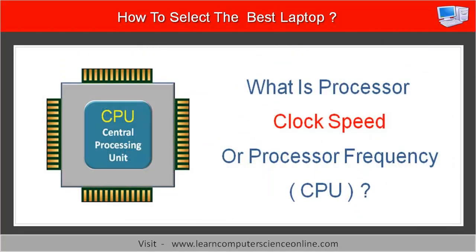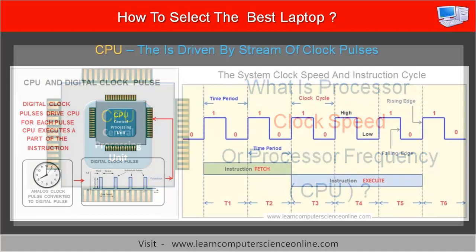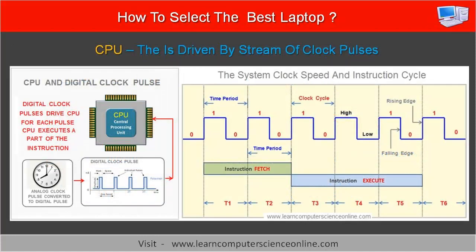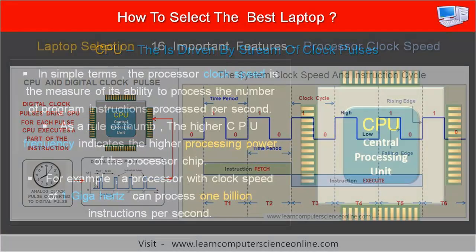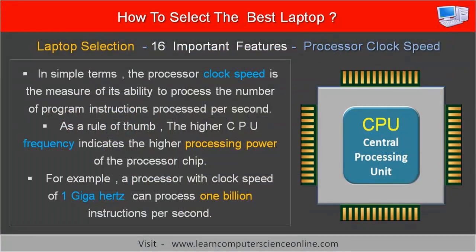Another important feature that indicates the processor performance is the processor frequency, or the clock speed of the CPU. In simple terms, the processor clock speed is the measure of its ability to process the number of program instructions processed per second. As a rule of thumb, the higher CPU frequency indicates higher processing power of the processor chip. For example, a processor with a clock speed of one gigahertz can process one billion instructions per second.